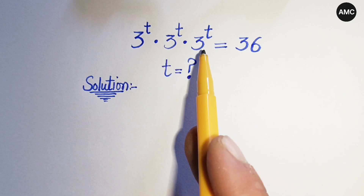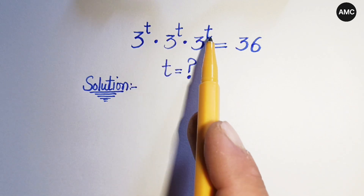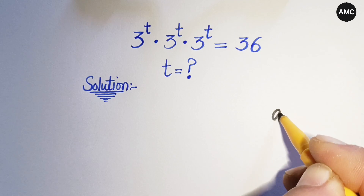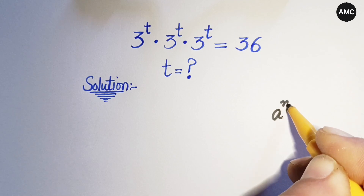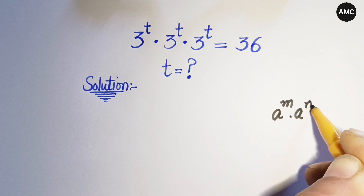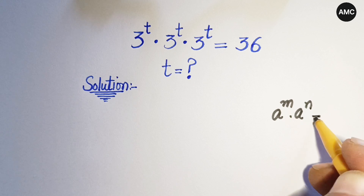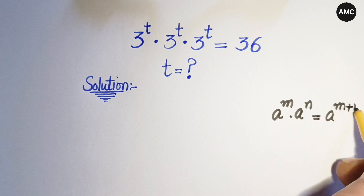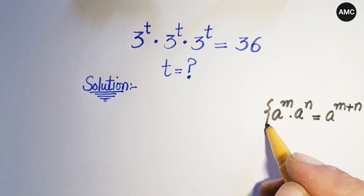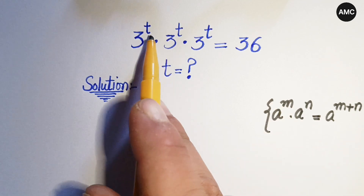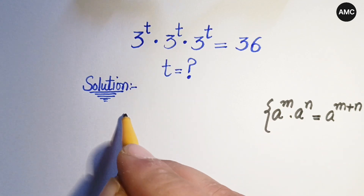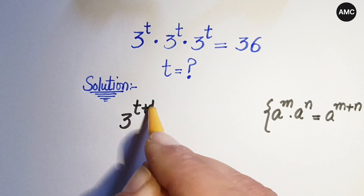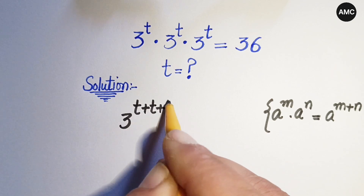First, we see that on the left hand side the bases are the same, so the powers will be added according to the exponential identity: if we have a to the power m times a to the power n, it can be written as a to the power m plus n. So here we can write 3 to the power t plus t plus t.